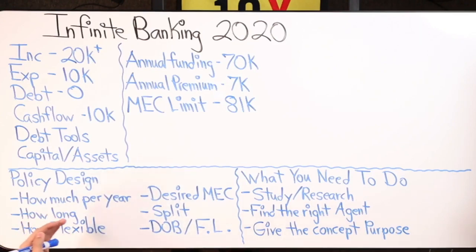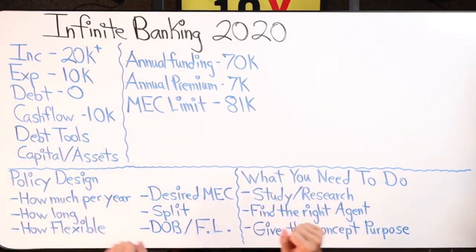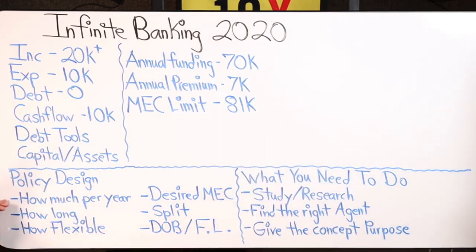The first question to ask yourself is: how much money do I want to put into this policy per year? Figure that out first. The second question is: how long would you like to fund the policy at the desired amount you chose?